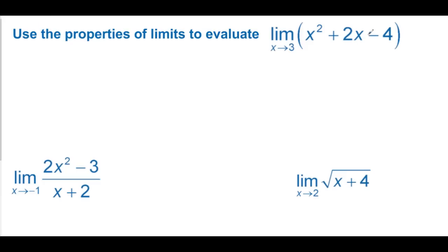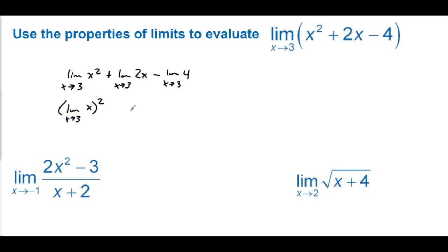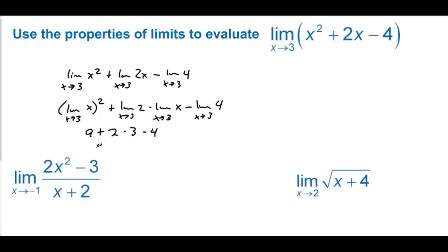Using the properties of limits to evaluate: we split the limit as x approaches 3 of x² + 2x − 4 into the limit of x² plus the limit of 2x minus the limit of 4. We extend further: limit as x approaches 3 of x² equals (limit of x)² = 3² = 9, plus the limit of 2 times the limit of x = 2 times 3 = 6, then minus the limit of 4 = 4. So we have 9 + 6 − 4 = 15 − 4 = 11.